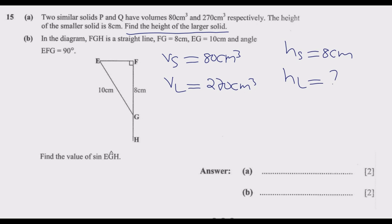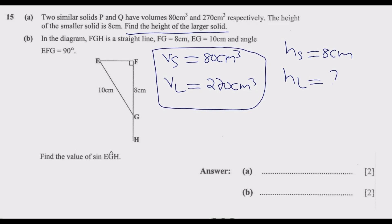When dealing with proportions and ratios, you need to use simplified ratios. Simplify them to the lowest possible form. The first thing we need to do is find the ratio of the volumes in their simplified form.